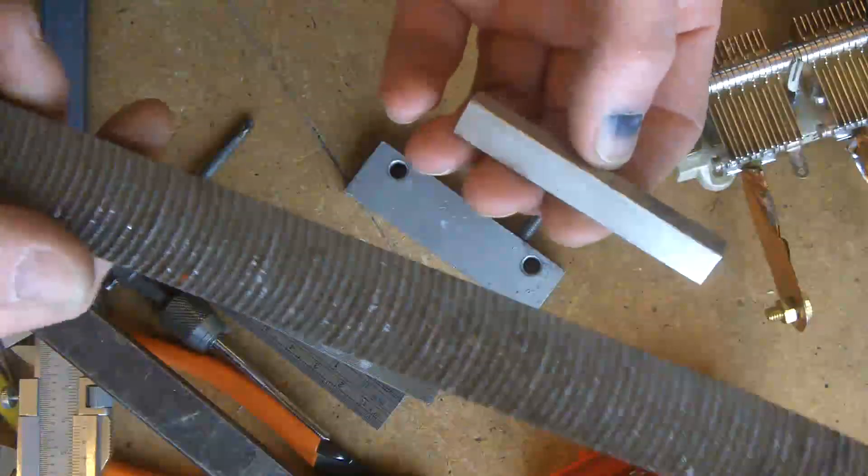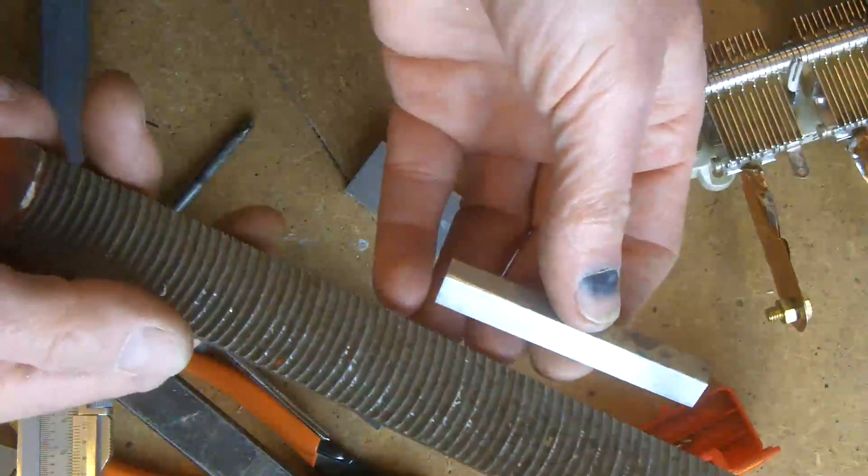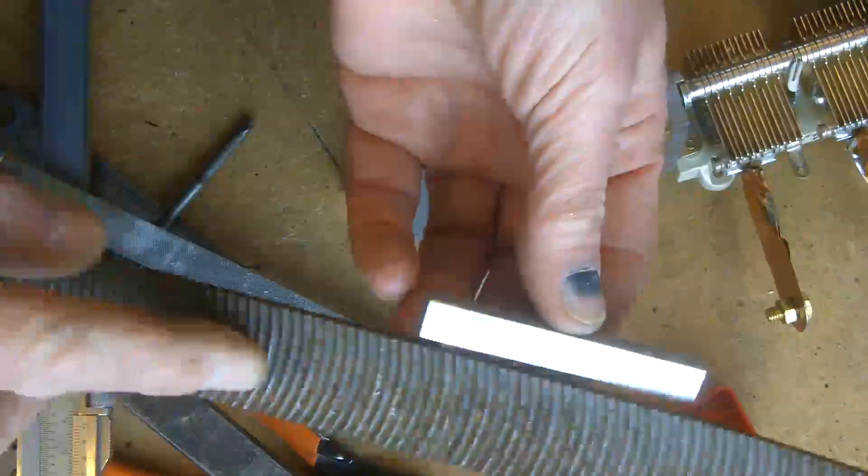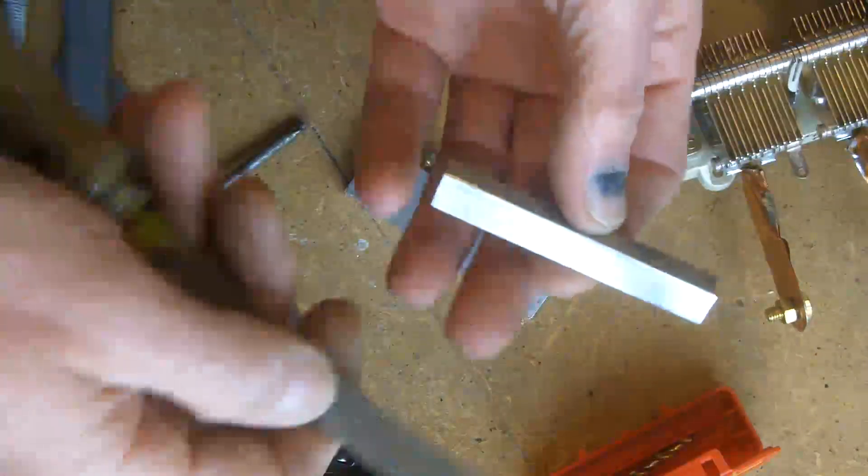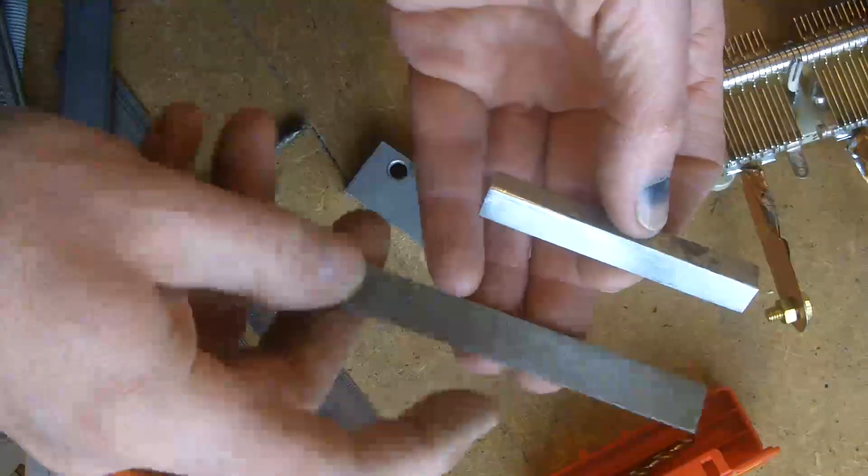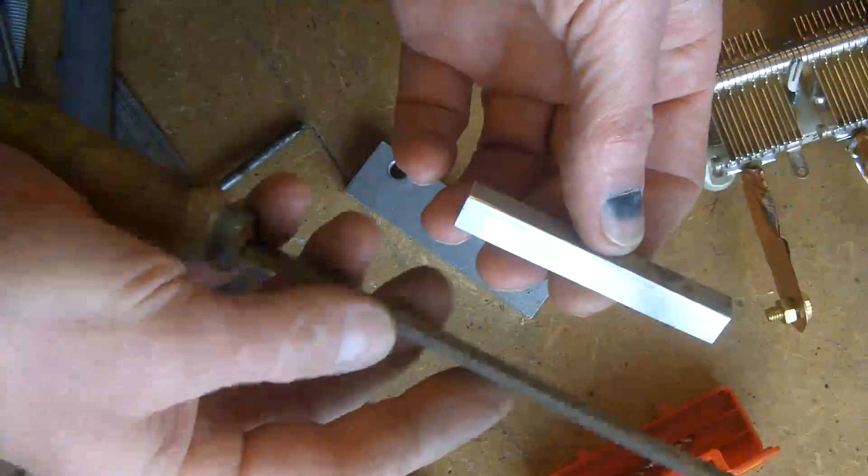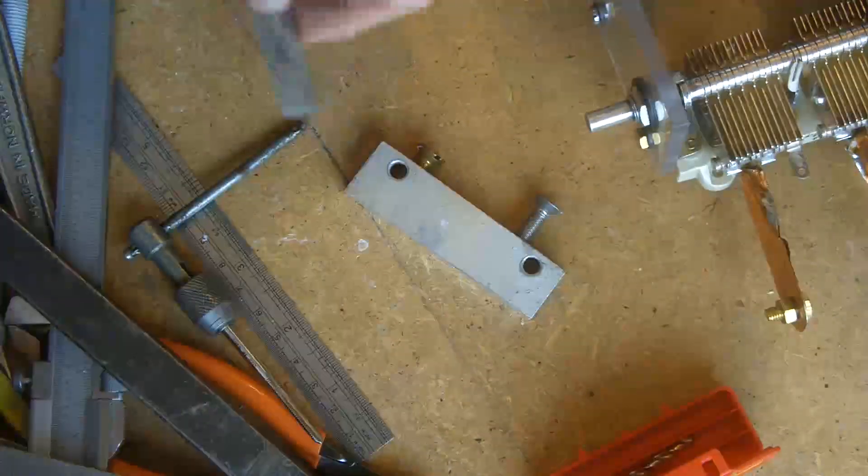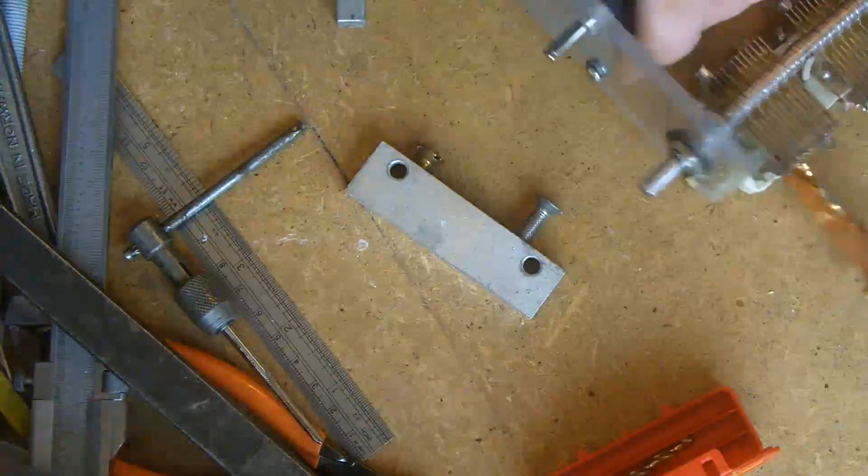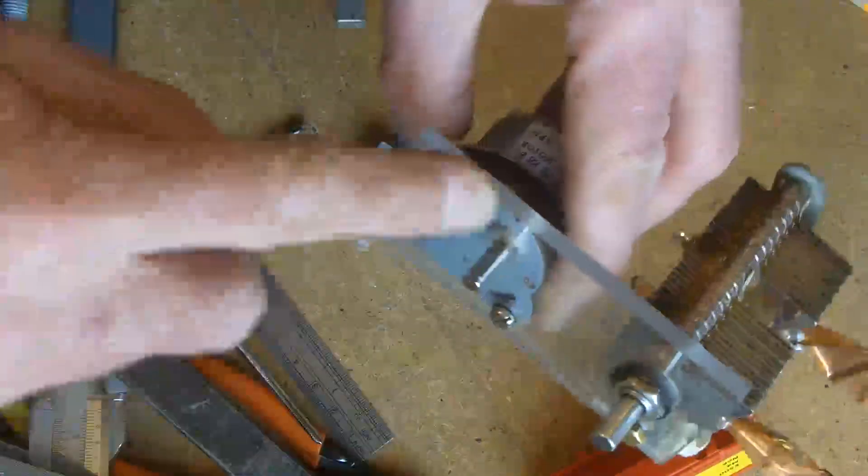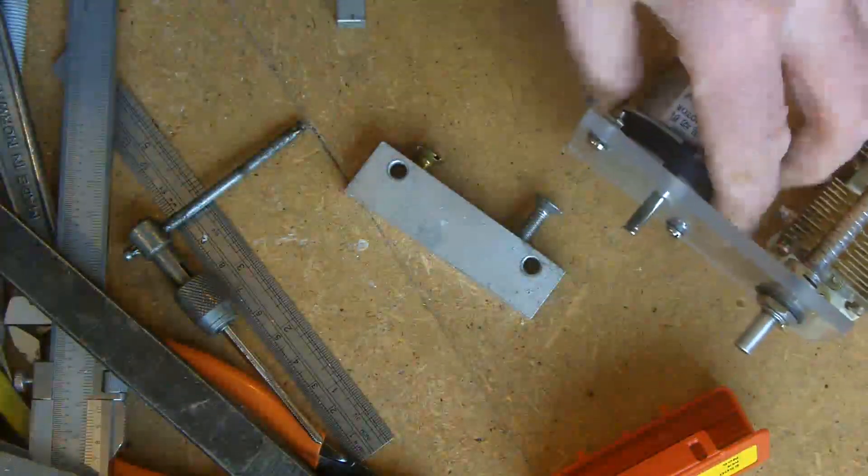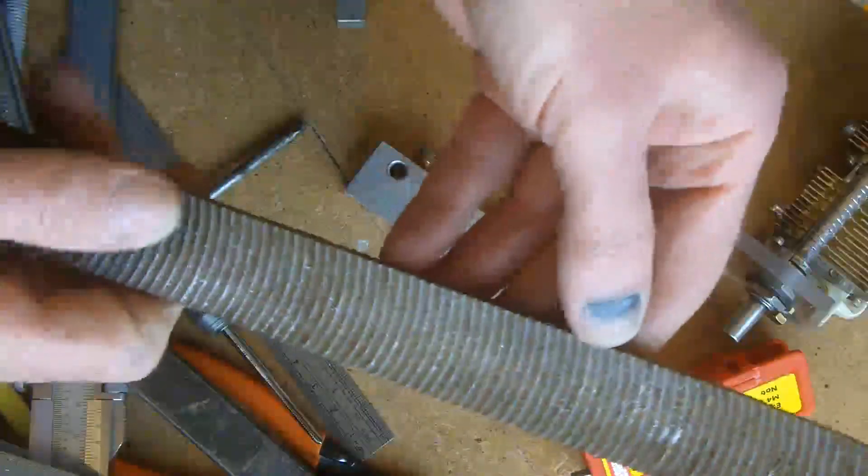With my dreadnought file, that bit of string is my measurement for the focal length. The dreadnought file doesn't clog up. If you try to file aluminium with a fine file like this then it will clog up.